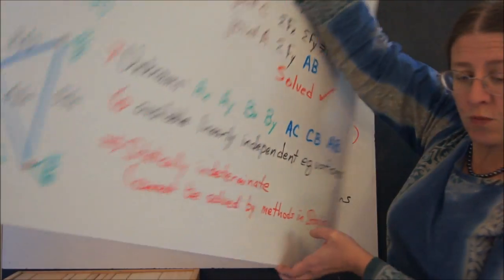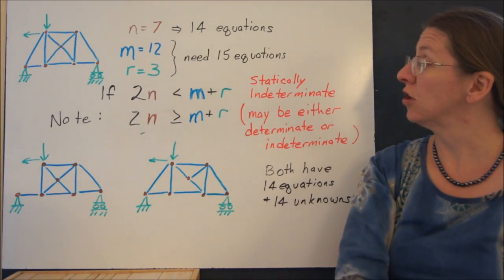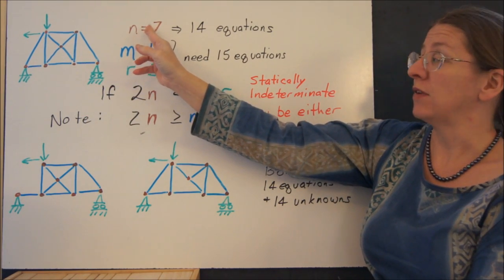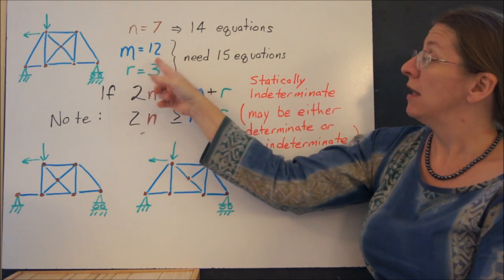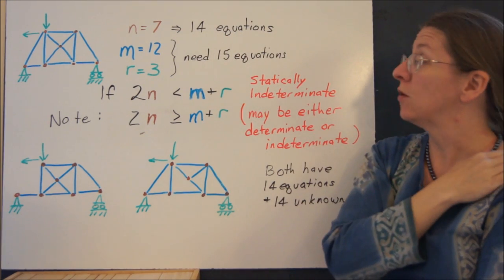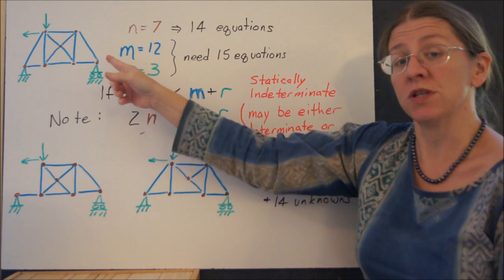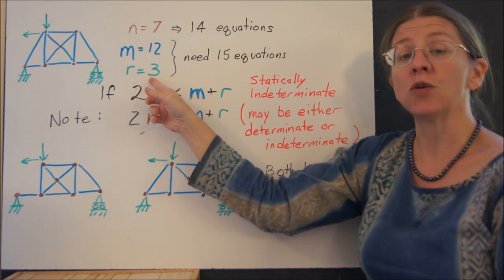And if you want to look at what those equations actually look like, here's another one. Here I have n equals seven. That's the number of joints. So I have at most 14 equations. If I have 12 members, which this truss has, and three external reactions,